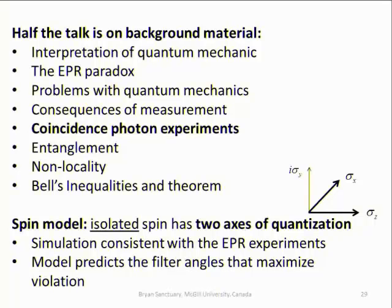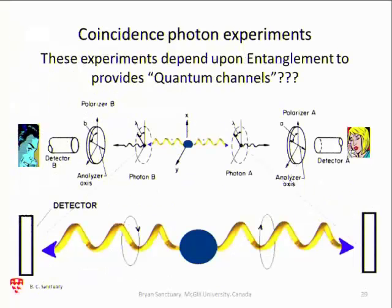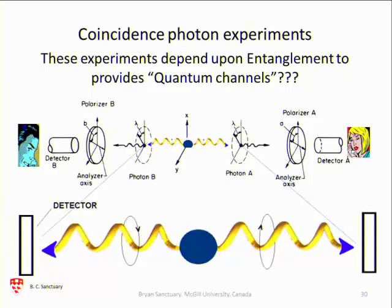What I should now talk about briefly are the experiments which have caused all the fuss — the coincident photon experiments, which were derived a long time ago. These are very simple experiments to understand. People have done all sorts of additional experiments: two-photon experiments, three-photon experiments, teleportation, GHZ states, quantum erasers — they all use the same kind of experiment. But unless you understand two photons, you're not going to understand the more complicated states.